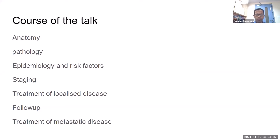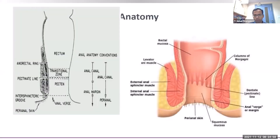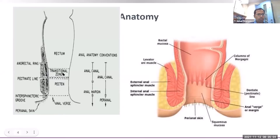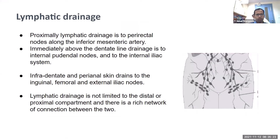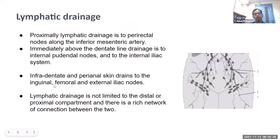I will also cover how to follow up and how to treat metastatic or locally advanced disease. The anal canal runs from the anal verge to above the transitional zone; below the anal verge is the anal margin. Cancer of the anal margin is treated the same way as anal canal cancer. Lymphatic drainage is important for radiotherapy planning.